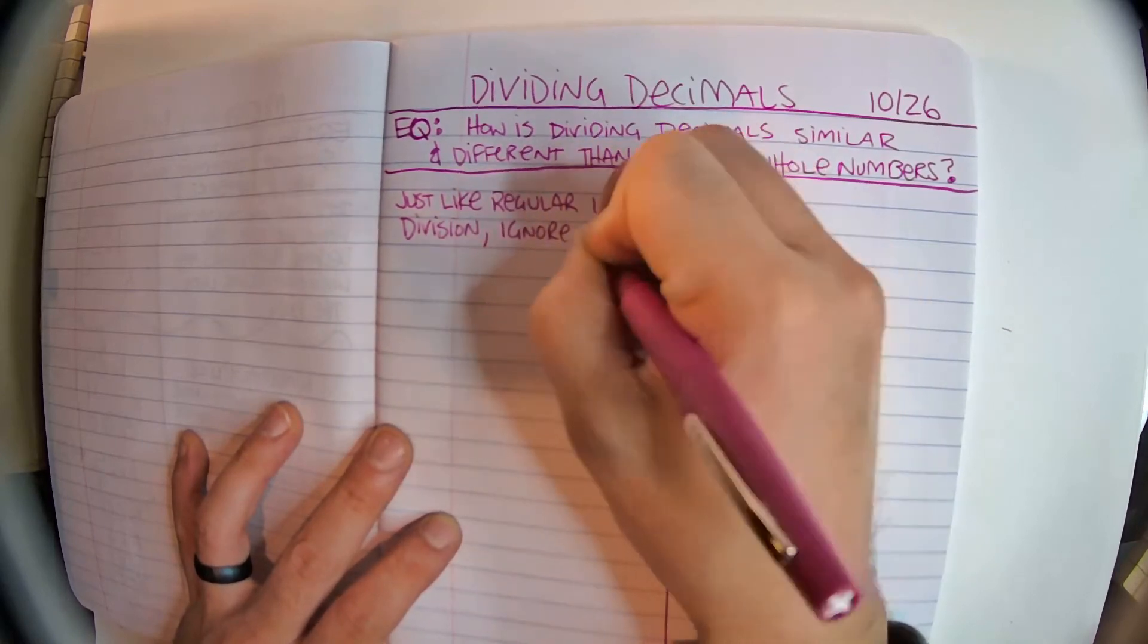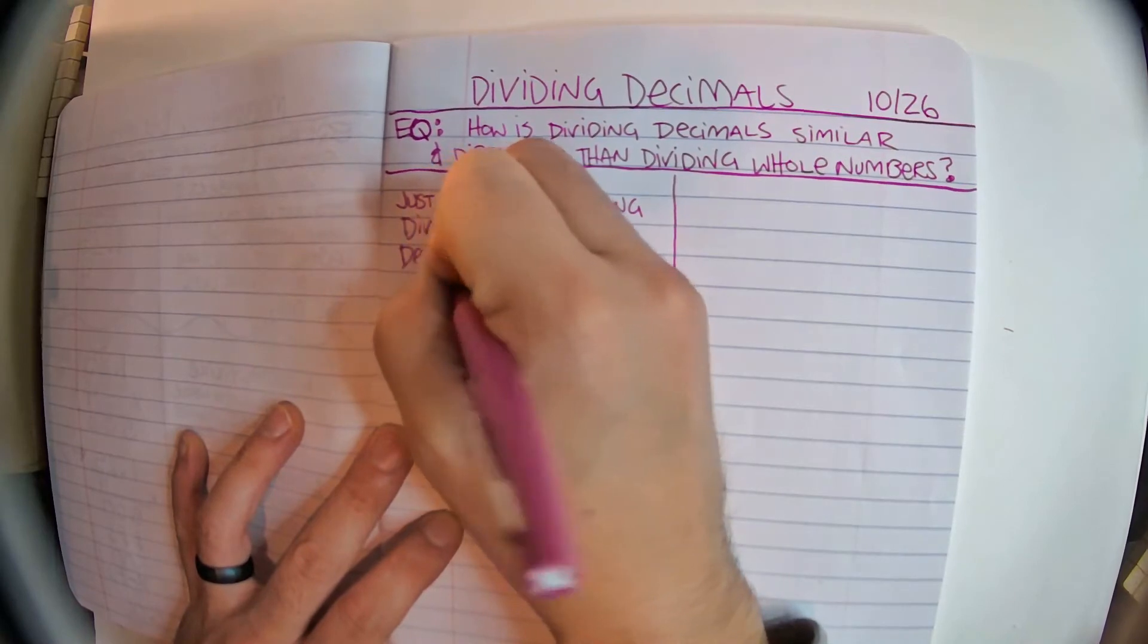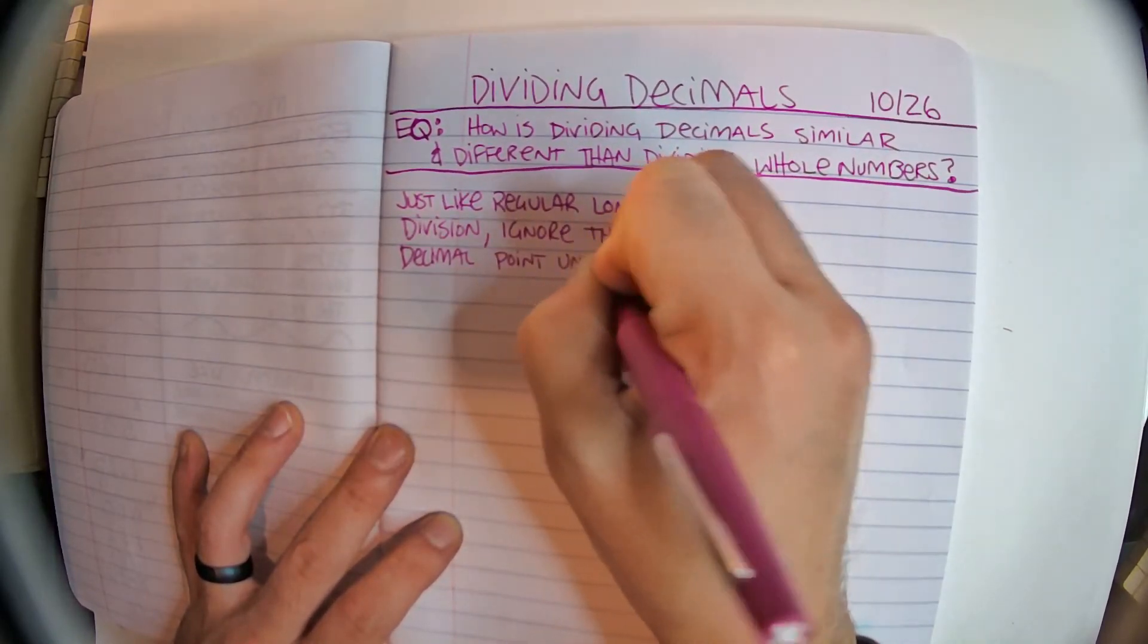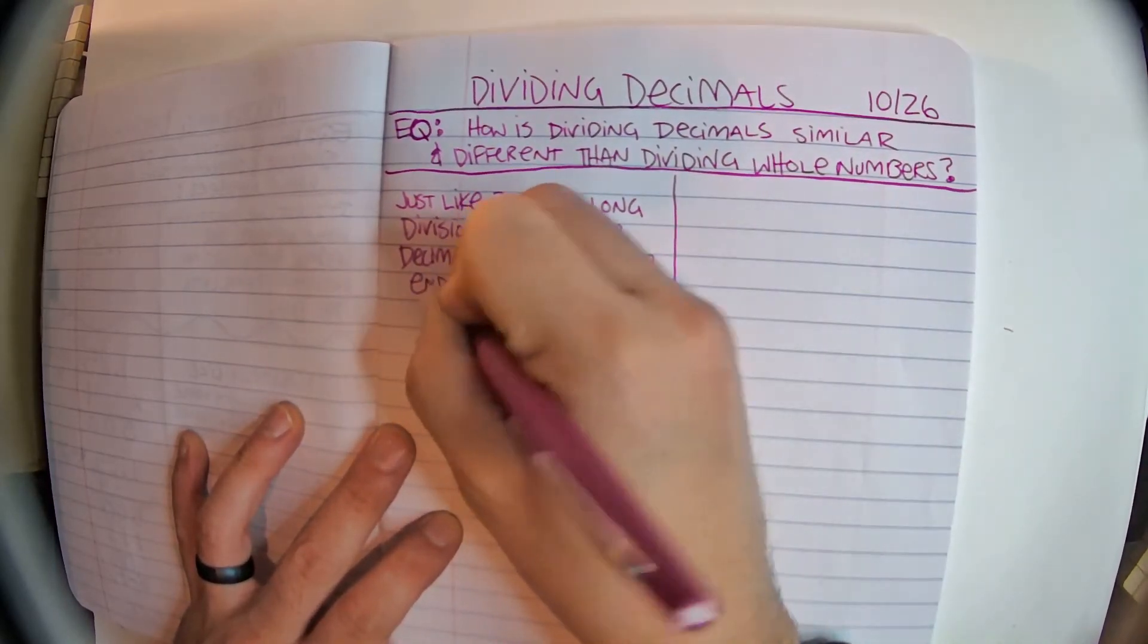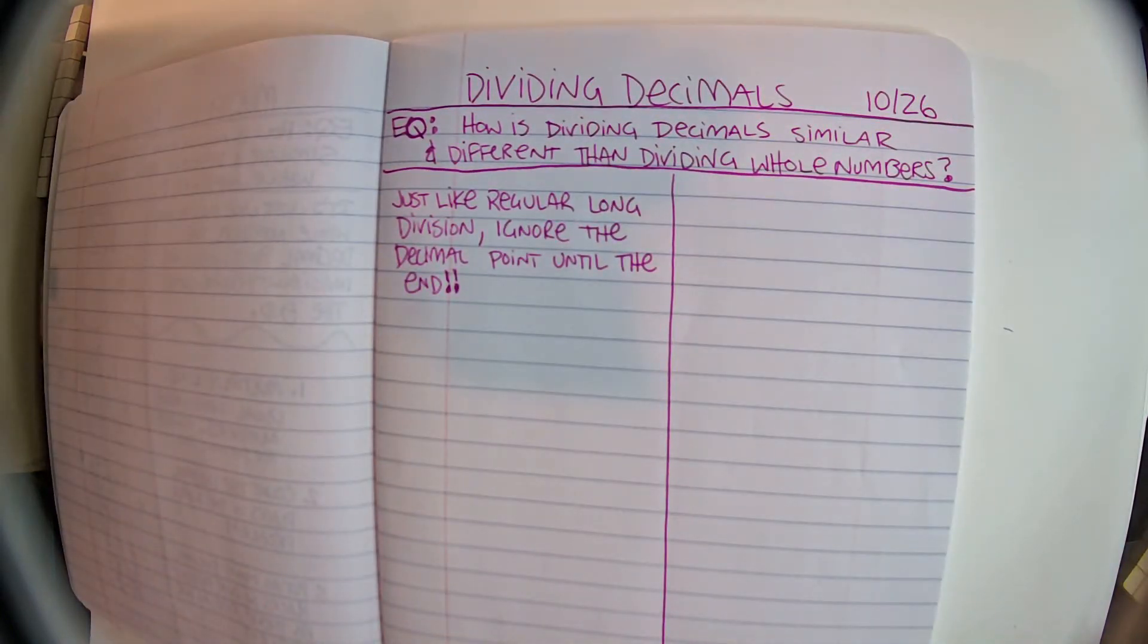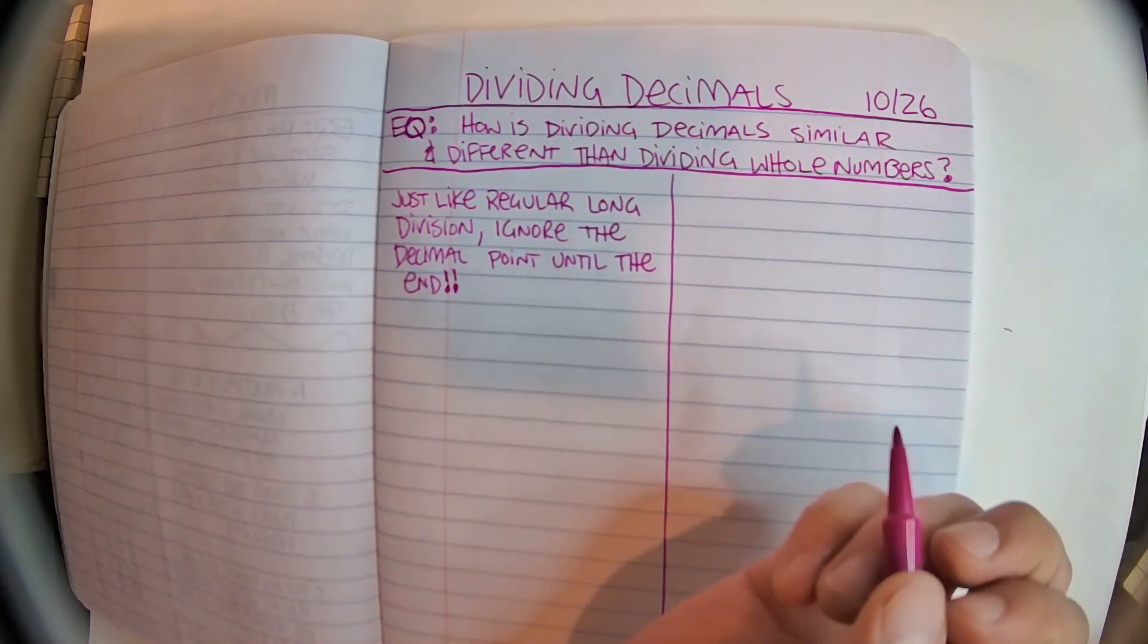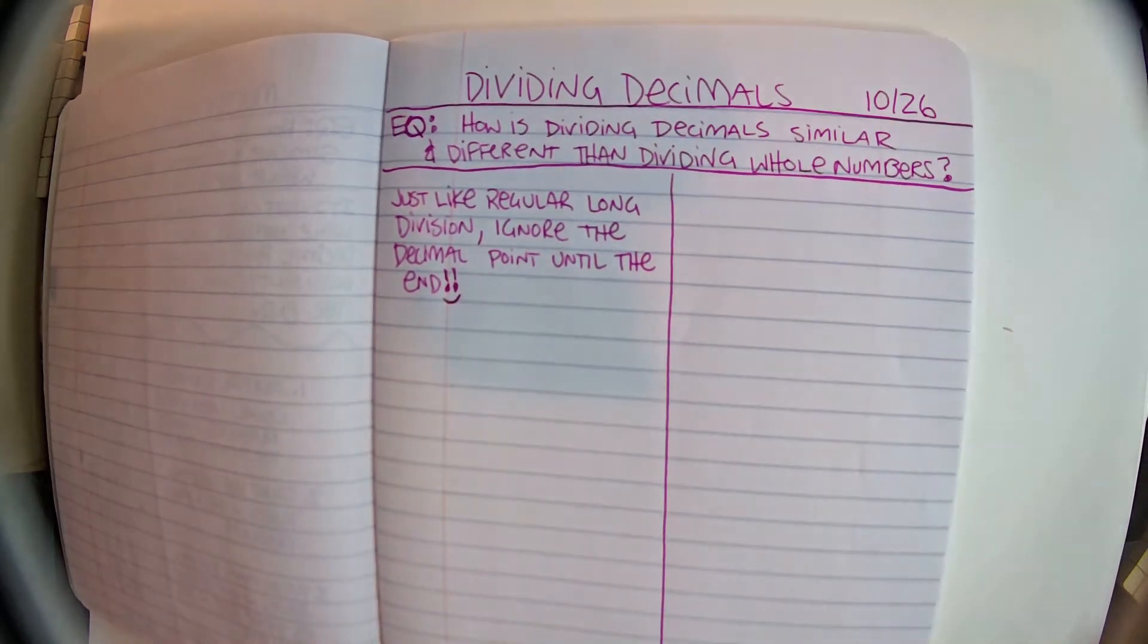Ignore the decimal point until the end. Double exclamation point. Just like regular division. Ignore the decimal point until the end.